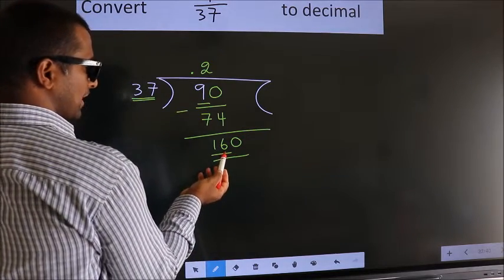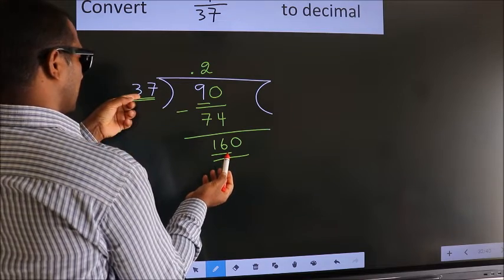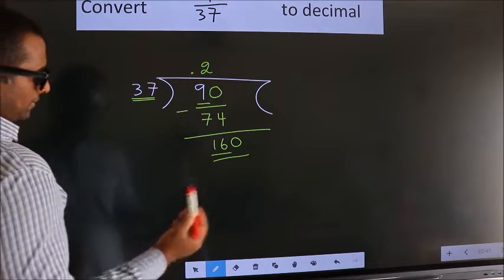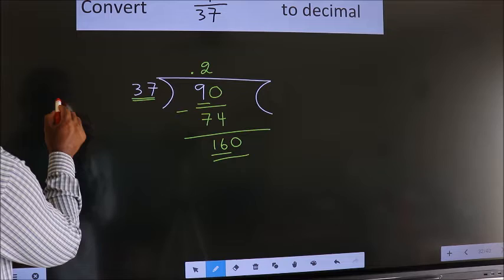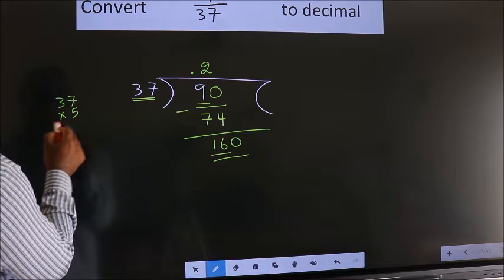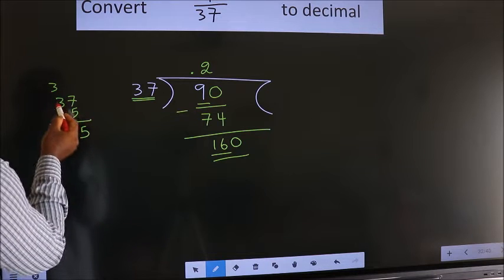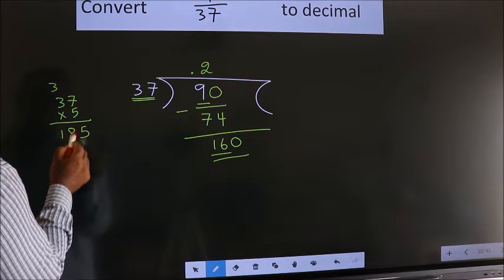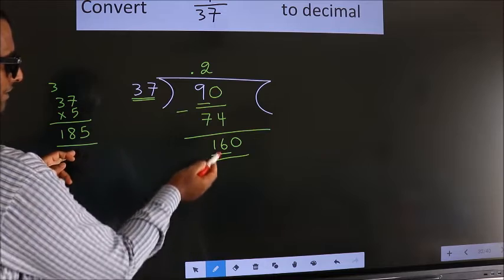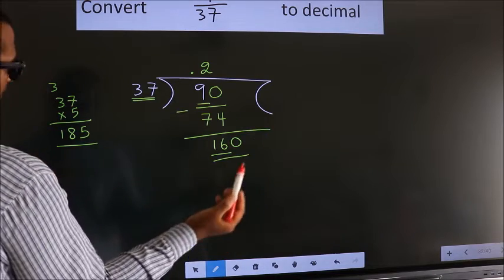A number close to 160 in 37 table is, let us check with 5. So, 37 5 times. 5 times 7 is 35. 5 times 3. 5 times 3 is 15 plus 3, 18. 185 exceeds 160.